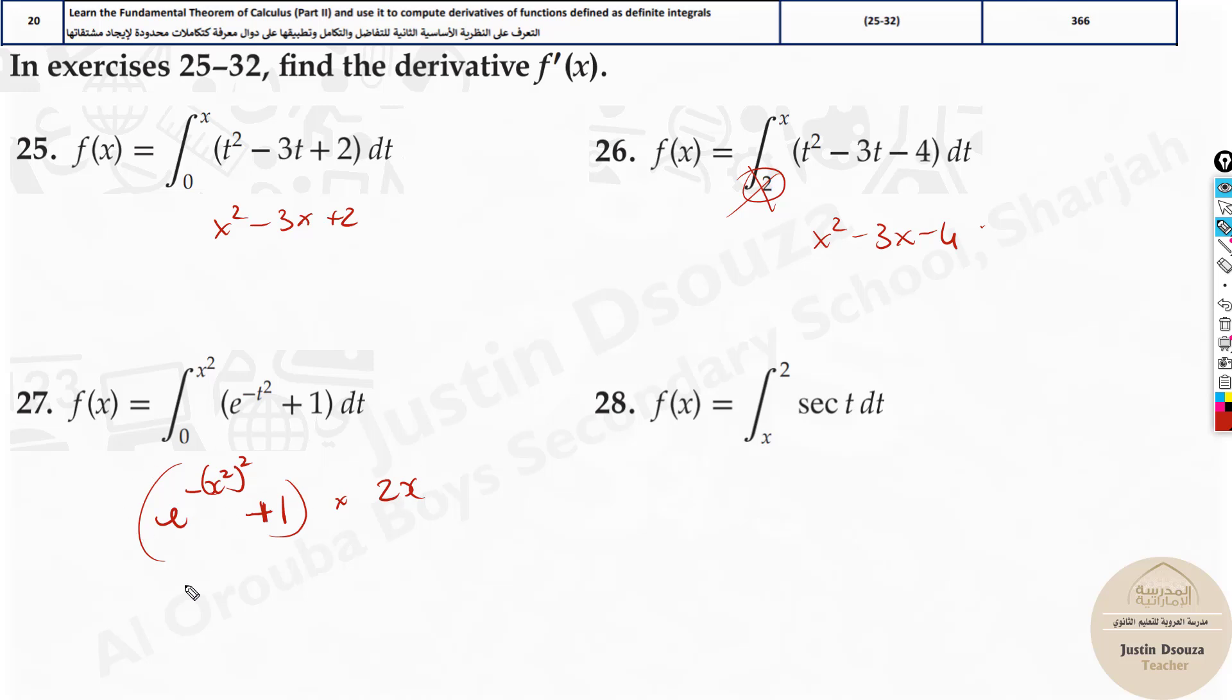So over here, it will be 2x. So now what happens is, 2x will be multiplied here. It will be 2x e^(-x^4), 2 times 2 is 4, plus 2x. This would be the answer.